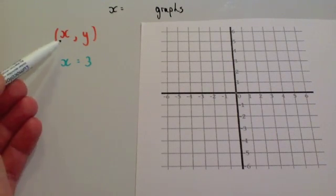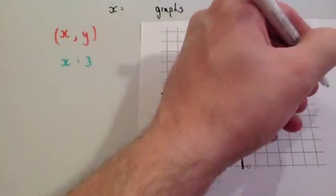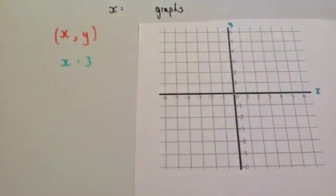Just remember a coordinate comes in the format x, y. Remember along the corridor up the stairs, so you go across the x axis first of all, and then you go up the y axis.